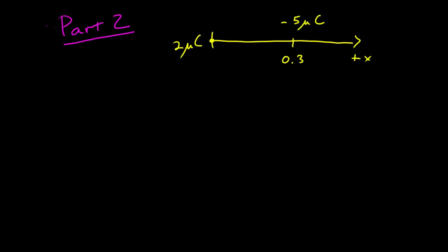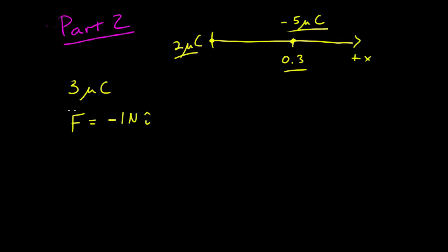In part two, I want to look at multiple charges in one dimension. I'm going to continue with the problem we had before where we have two charges: one at the origin of two micro coulombs, one at 0.3 meters with negative five micro coulombs. Our next task is to place a charge of three micro coulombs such that the force on the charge at the origin equals negative one newtons — that is, one newton in the negative x direction.